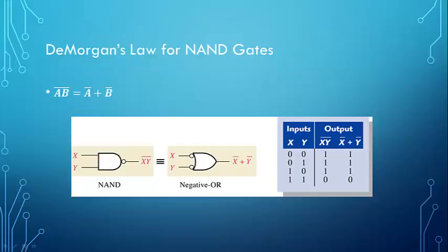Here we have De Morgan's Law for NAND gates. AB NANDed together is not equal to A-NOT ANDed with B-NOT, but rather AB NANDed together is equal to A-NOT ORed with B-NOT. Our NAND is equivalent to a negative OR, and we can see that looking at the truth table here. All 1s gives us a 0; anything is a 0 and we get a 1. However, if we invert each of our inputs — X-NOT and Y-NOT — and OR them together, we see the NANDed combination is the same as the ORed combination of the inverted inputs.